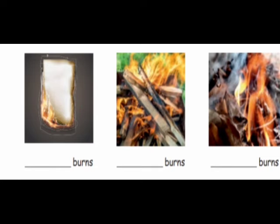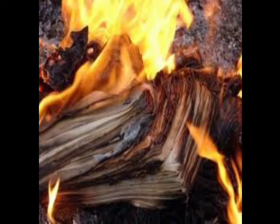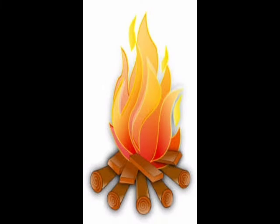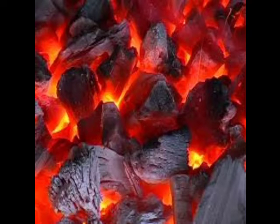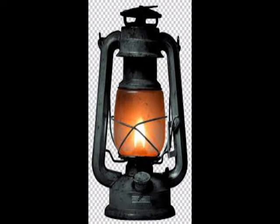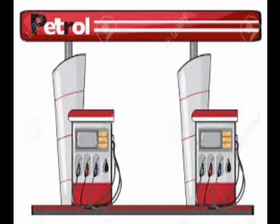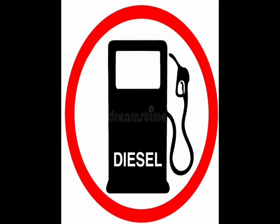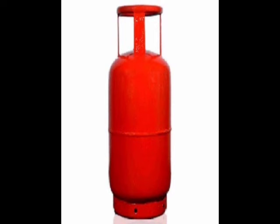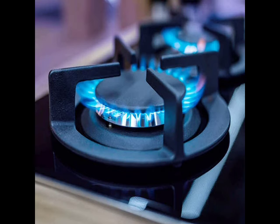In the first picture, paper burns. In the second picture, wood burns. In the third picture, leaves burn. Paper, firewood, dried leaves, and charcoal can be burnt. Liquids like kerosene, petrol, and diesel also burn on heating. Domestic gas burns and helps in cooking.